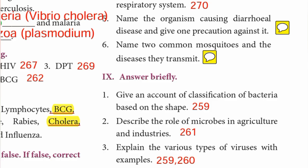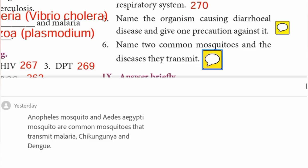Sixth one — name two common mosquitoes and the diseases they transmit. Anopheles mosquito and Aedes aegypti mosquito are common mosquitoes that transmit malaria, chikungunya, and dengue.